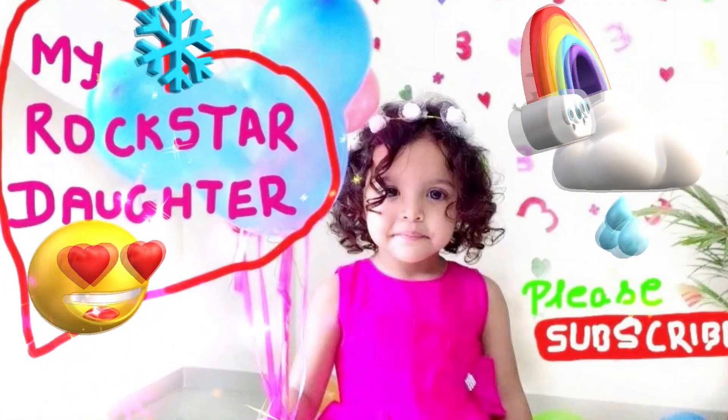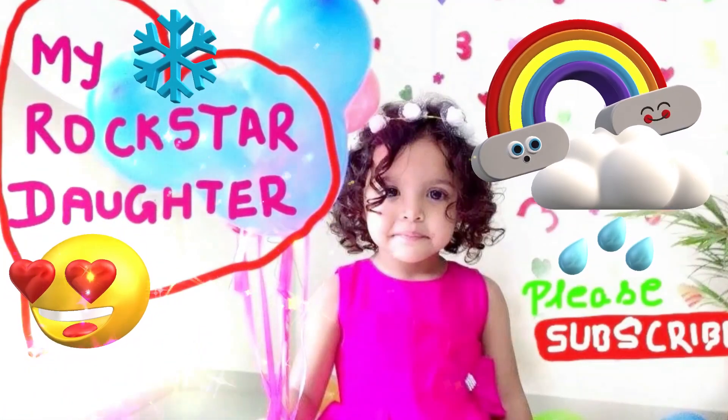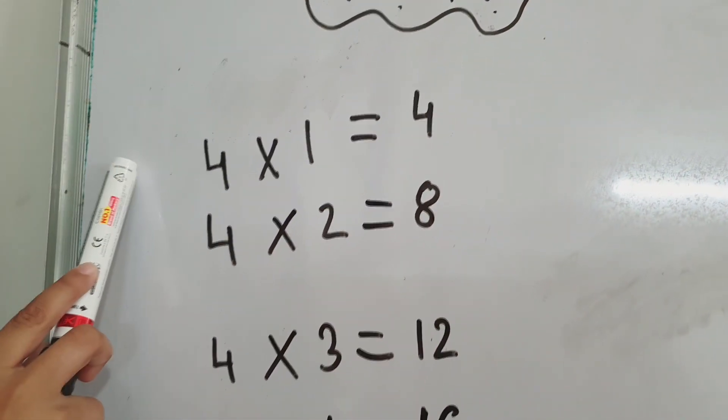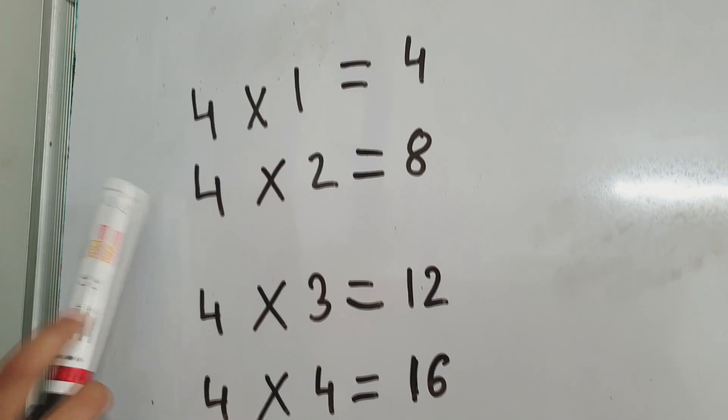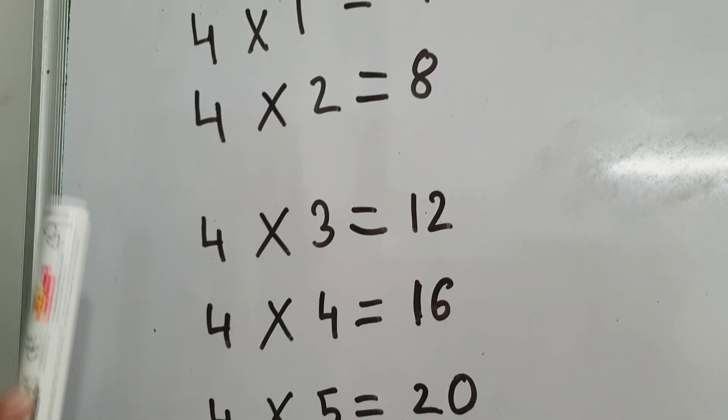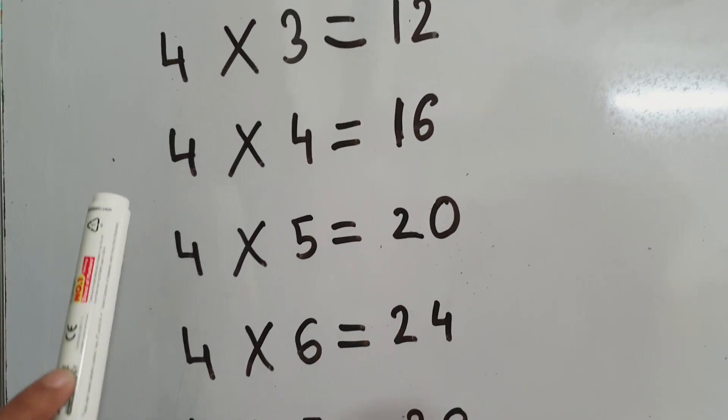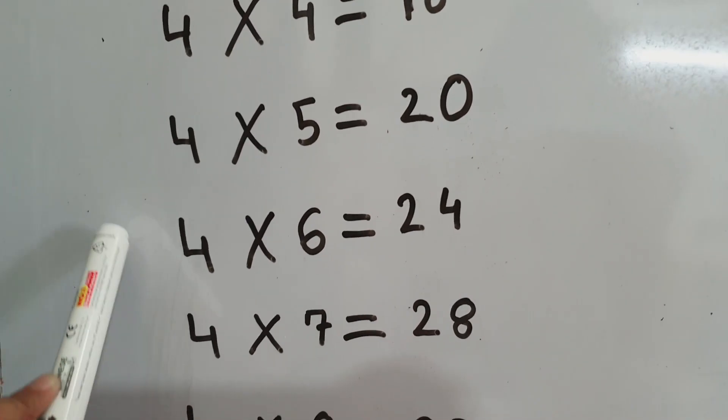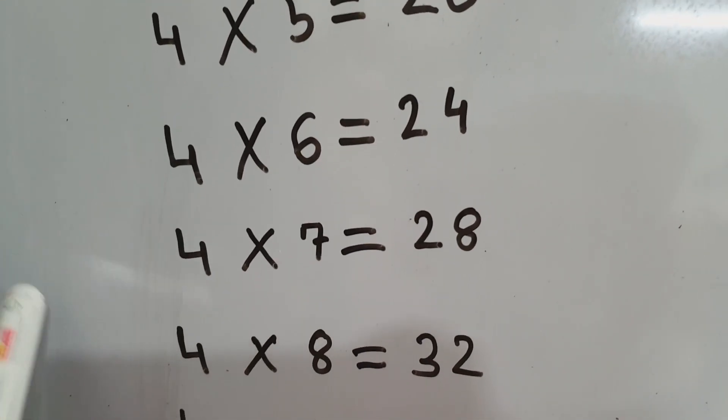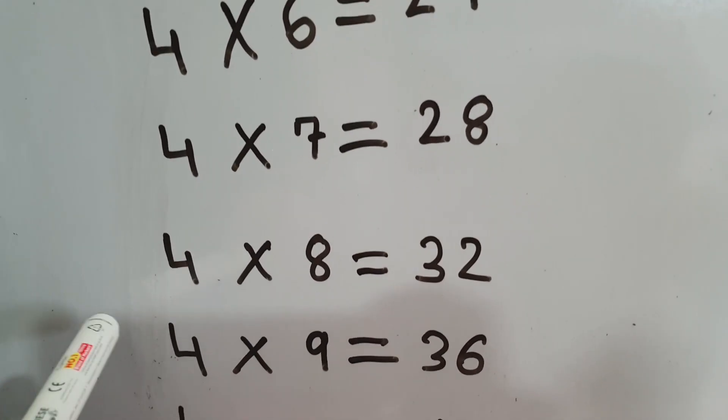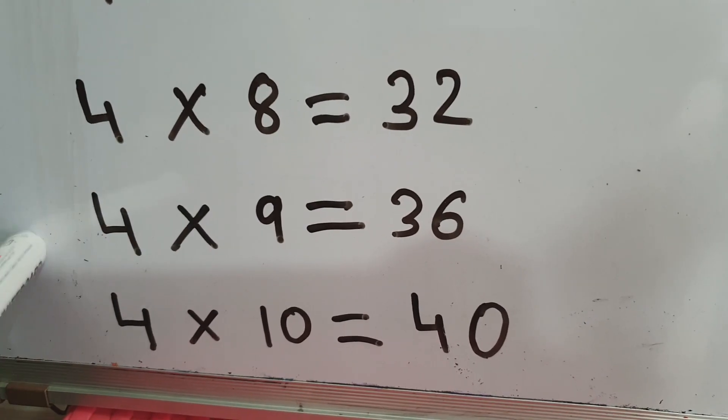Hi friends, welcome to My Rockstar Daughter. 4 ones are 4, 4 twos are 8, 4 threes are 12, 4 fours are 16, 4 fives are 20, 4 sixes are 24, 4 sevens are 28, 4 eights are 32, 4 nines are 36, 4 tens are 40.